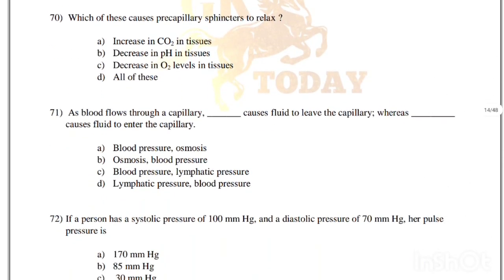Which of these causes precapillary sphincters to relax? Increase in carbon dioxide, decrease in pH in tissues, decrease in oxygen levels in the tissues, or all of these. Correct answer is option D, all of these — increase in CO2, decrease in pH, and decrease in oxygen.